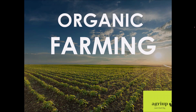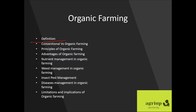Hello everyone, this is Ekriya Pedos, and today in this video we are going to talk about Chapter 1 of organic farming. In this video we will be discussing the definition, the difference between conventional and organic farming, the principles of organic farming, the advantages, nutrient management, weed management practices, disease management, and IPM — insect pest management. We will also cover limitations and implications of organic farming. So let's begin.